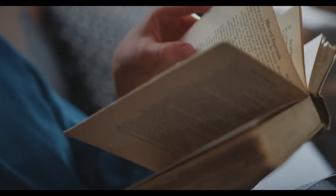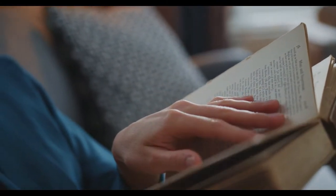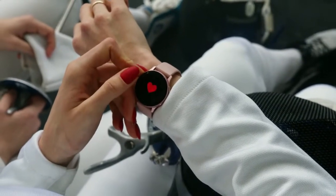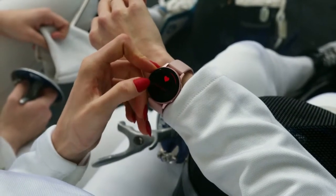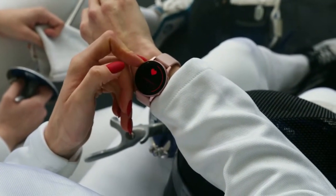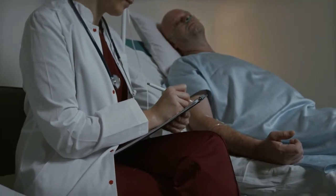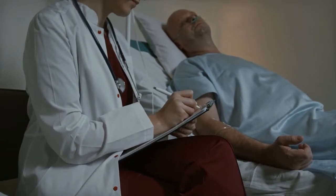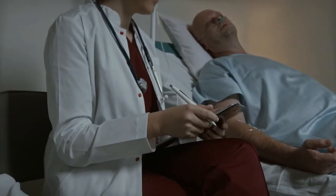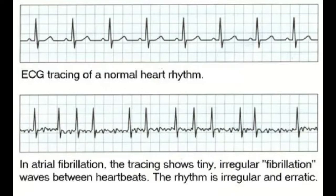According to the writings of William Withering, digitalis was believed to slow heart rate, particularly in patients with an irregular pulse. Digoxin and digitoxin are cardiac glycosides that have been used since the early 20th century to improve symptoms and reduce hospitalization in patients with heart failure with reduced left ventricular ejection fraction (LVEF).